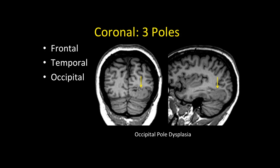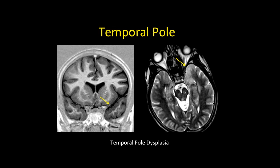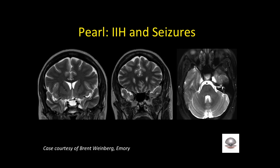On the coronal MP-rage, look at the three poles: the frontal pole, the temporal pole, and the occipital pole. Here's a case of occipital pole dysplasia, a subtle frontal pole dysplasia on the right, and a temporal pole dysplasia with blurring of the gray-white matter margin. Another pearl: if you see a flattened, expanded empty sella suggesting IIH, look for temporal pole encephaloceles as a seizure source, and also check the anterior cranial fossa orbital-frontal region where encephaloceles can breach into the orbit.